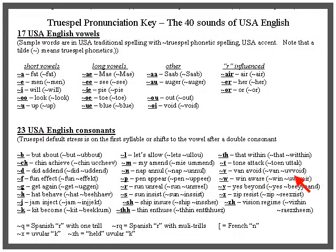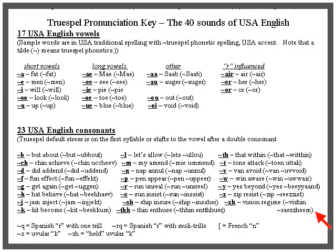V: 'van' and 'avoid.' W: 'when' and 'aware.' Y: 'yes' and 'beyond' — the double Y indicates stress on 'yond.' Z: 'zip' and 'resist.' And the famous ZH sound — spelled that way — as in 'vision' and 'regime.' The double Z shows the stress there.